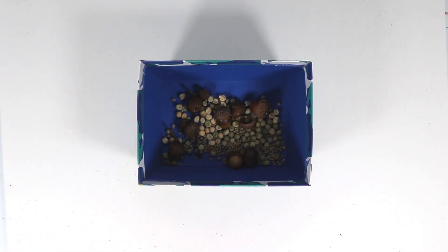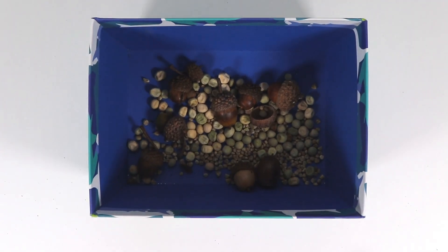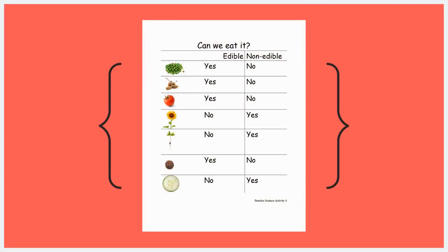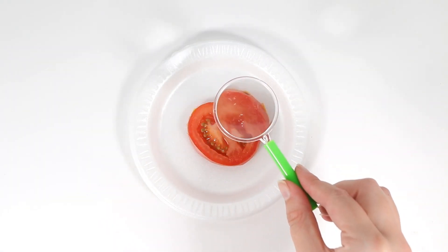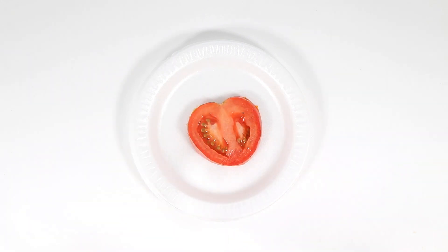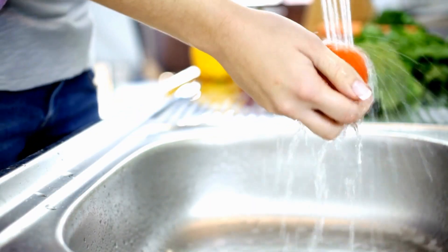Ask children to tell you what they have learned about seeds. Show and describe examples of edible and non-edible seeds in a box to children. Ask children to compare the seeds. Create a documentation panel to record children's responses about whether or not each of the edible and non-edible seeds can be eaten. Tell children to observe the seeds and the vegetables provided. They can observe using a magnifying glass, weigh vegetables using a balance scale, and they can touch the vegetables.